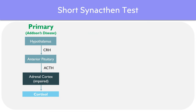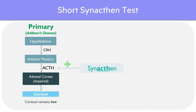Turning towards primary adrenal insufficiency, or Addison's disease, you can see that there's a problem with the adrenal cortex. When we administer synactin in this case, the levels of ACTH do go up, but the levels of cortisol remain low. That's because the problem is below the level of ACTH, so administering more ACTH does not have an effect.